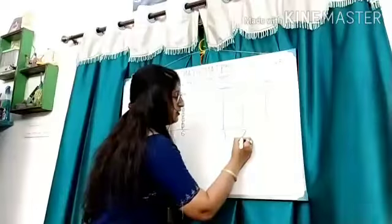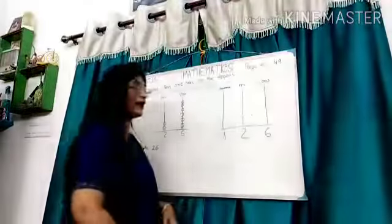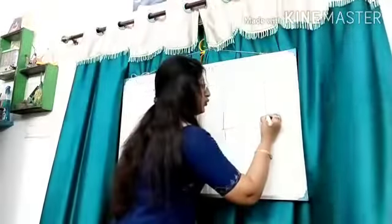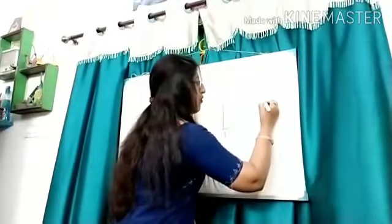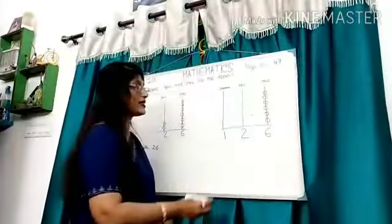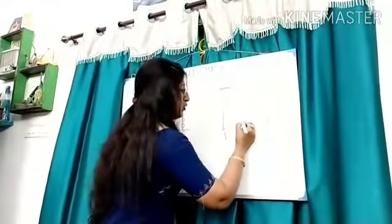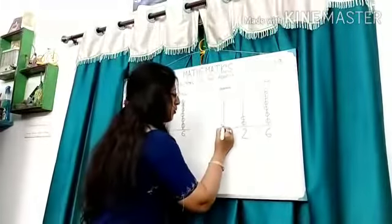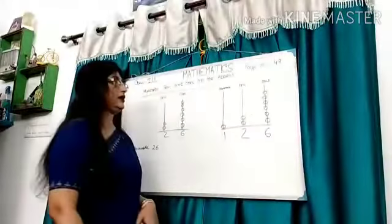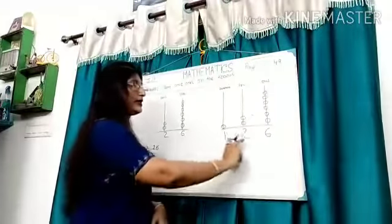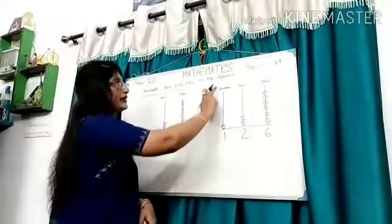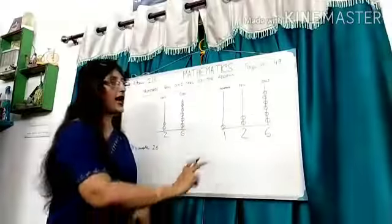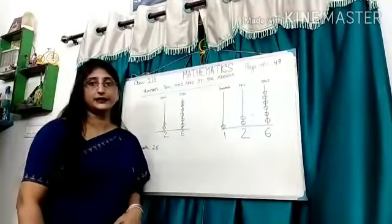For example, 126. 1, 2, 3, 4, 5, 6. 6 1s, 2 10s, 1 100. So the number is 126. 1 100 place, 2 10 place, and 6 1 place.